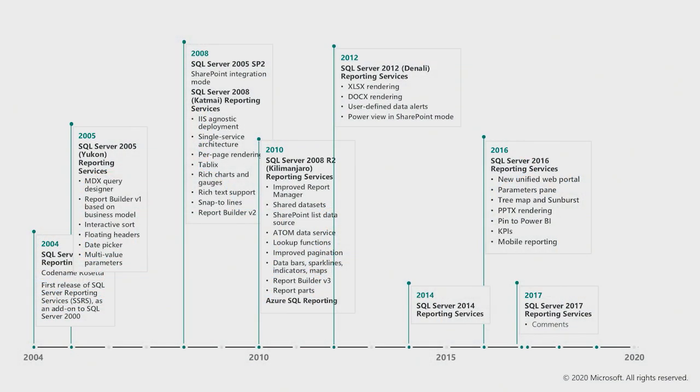2016 was another big release because there was some pause from 2012 to 2016 without a lot happening in the product, and then in 2016 there was a big revival with a new portal. On the engineering side, we changed the way the product worked — new REST APIs, integration of Datazen with mobile reports. And then in SQL Server 2017, a new commenting feature was added. But the big thing in 2017 is that we started shipping outside of the SQL Server box — our own separate release cadence.